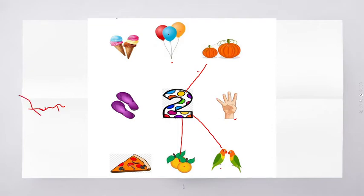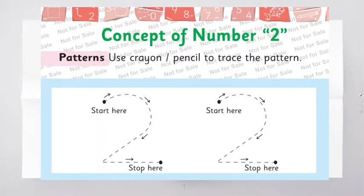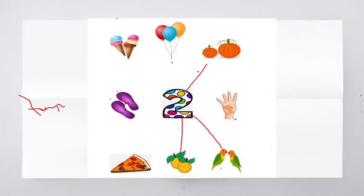How many slippers are there? One and two — let's connect it. The last picture: we have two ice creams, one and two — let's connect it. Excellent playgroups.